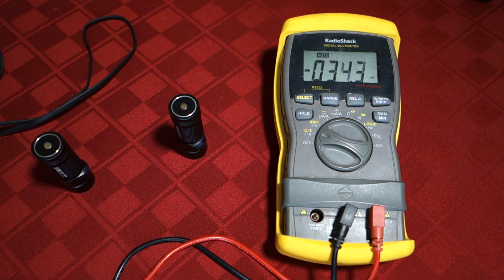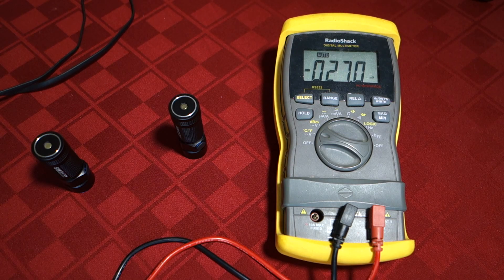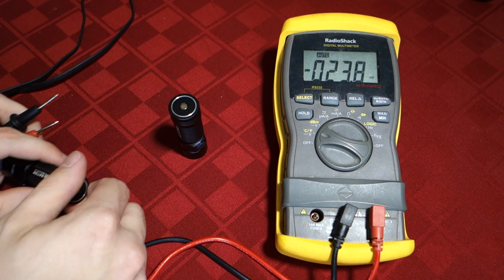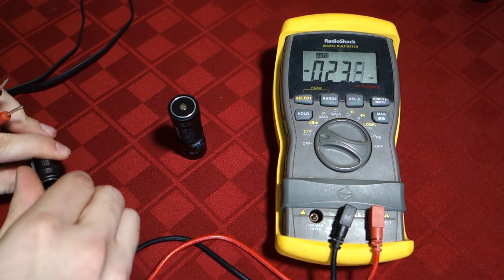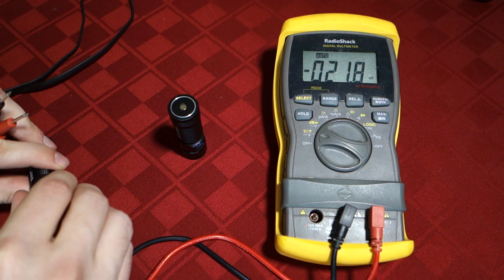So you can see here, this is just a normal multimeter. It's set to DC volts. It's probably not as accurate as a fluke would be, but I mean, it's decent enough.